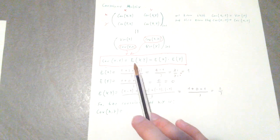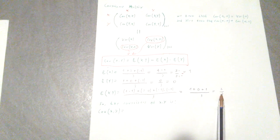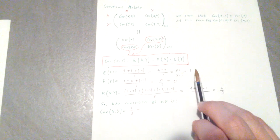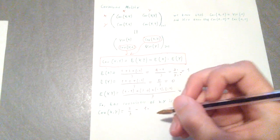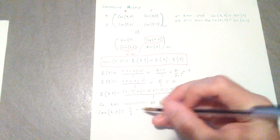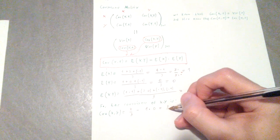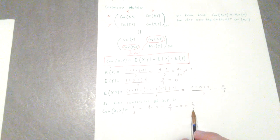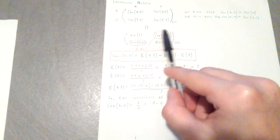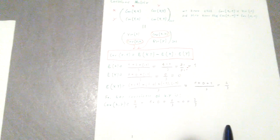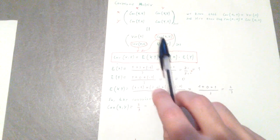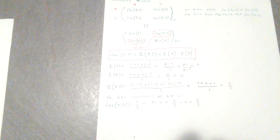So the covariance of x,y is: E[xy] minus E[x]·E[y] = 2/3 minus 1×0 = 2/3 minus 0 = 2/3. We found those two values, so we are halfway through. Now we only have to find the variance of x and the variance of y, and then we can plug everything into our matrix.